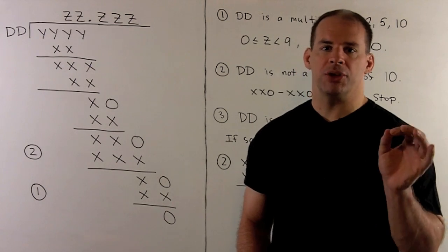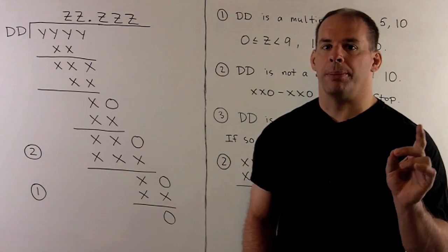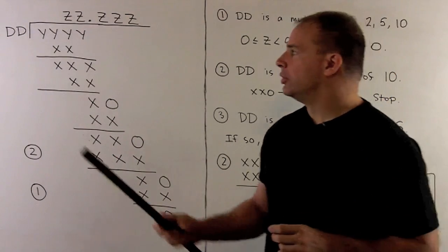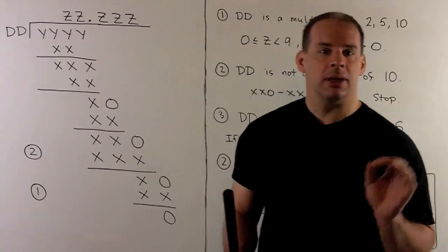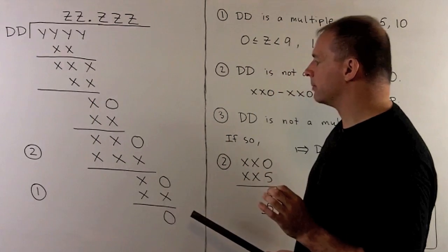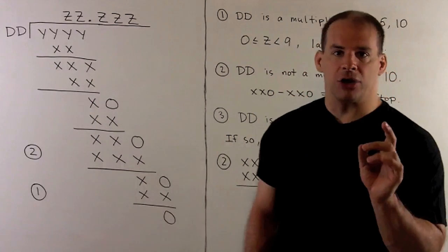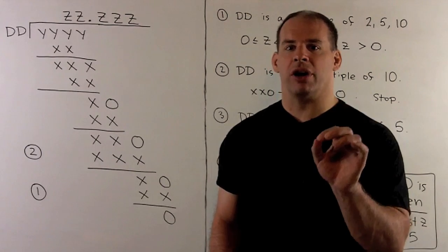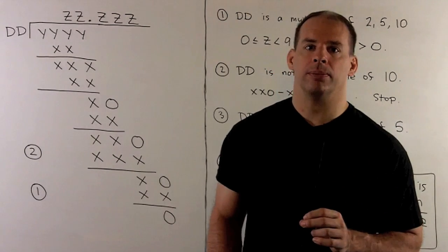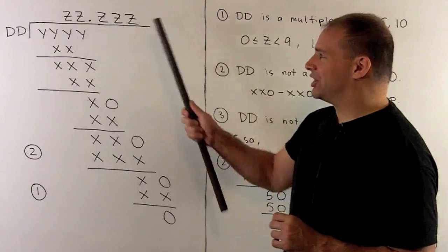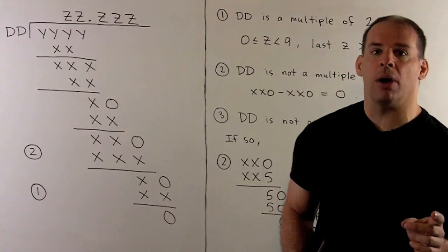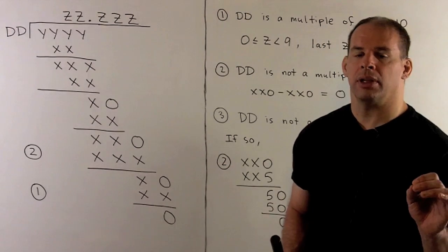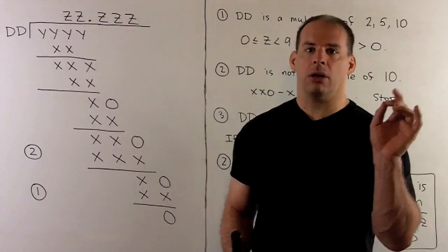Our problem here is a mystery long division. We have an unknown four-digit integer divided by an unknown two-digit integer. We get the resulting pattern for the long division, where each letter covers up an actual digit. This last digit Z is not covering a zero, so there's an actual number there that we need to use.